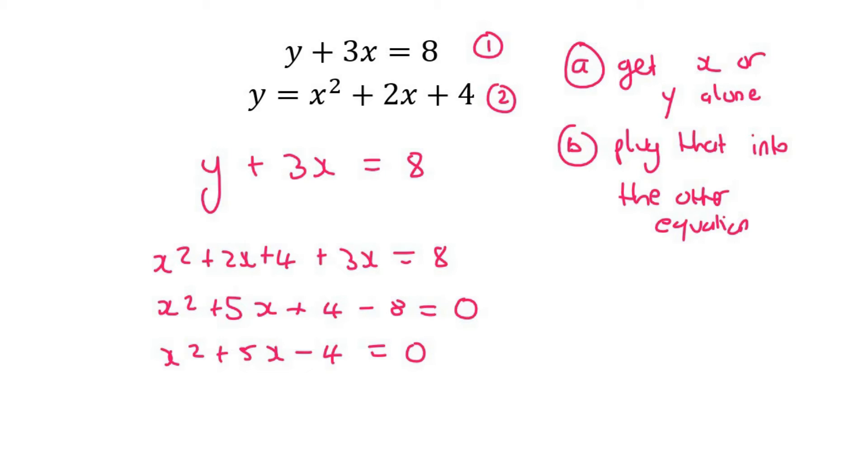And then you solve. Now I'm going to use the quadratic formula. I don't think this one solves very nicely. No, it doesn't. So we find that x is equal to 0.7 and x is equal to negative 5.7.